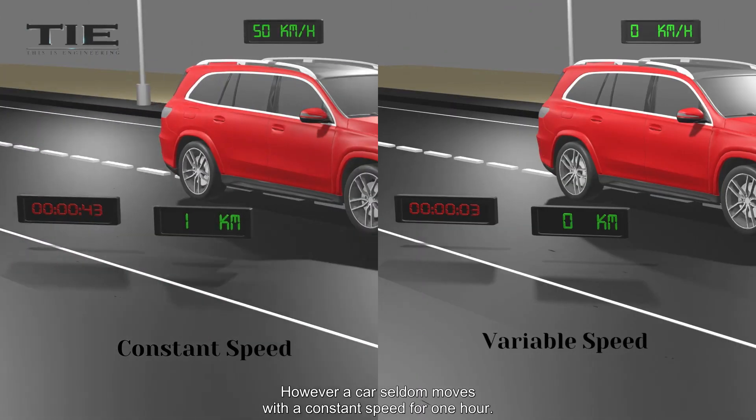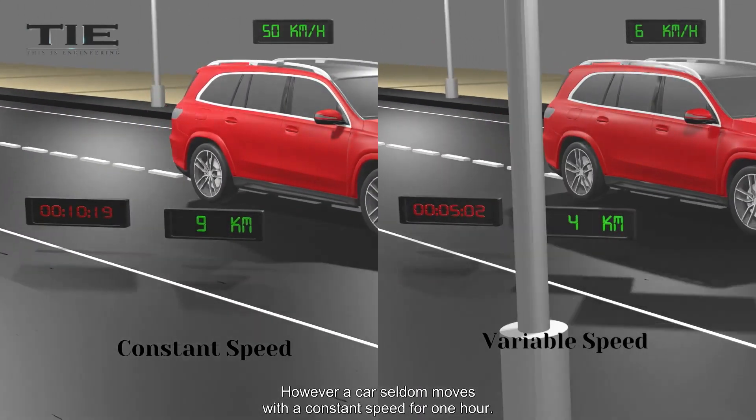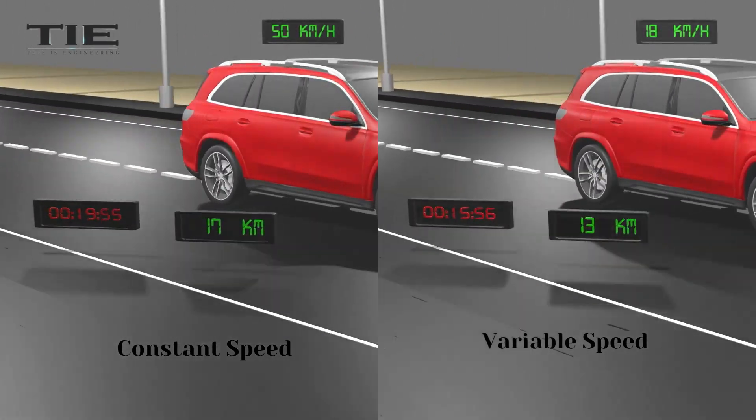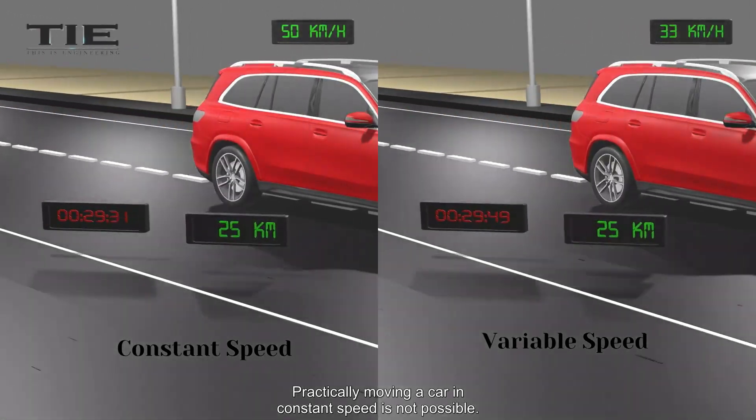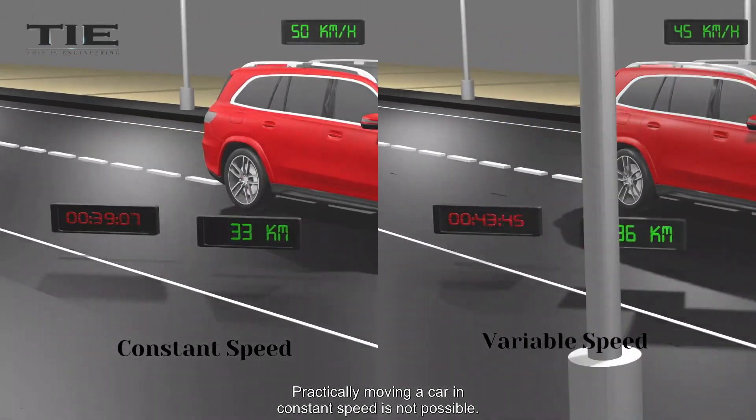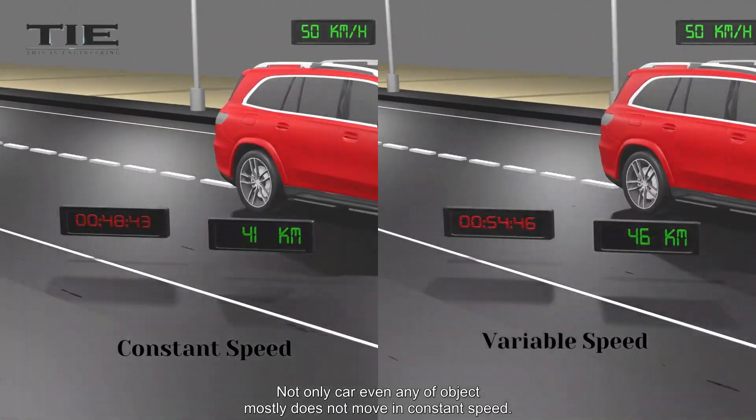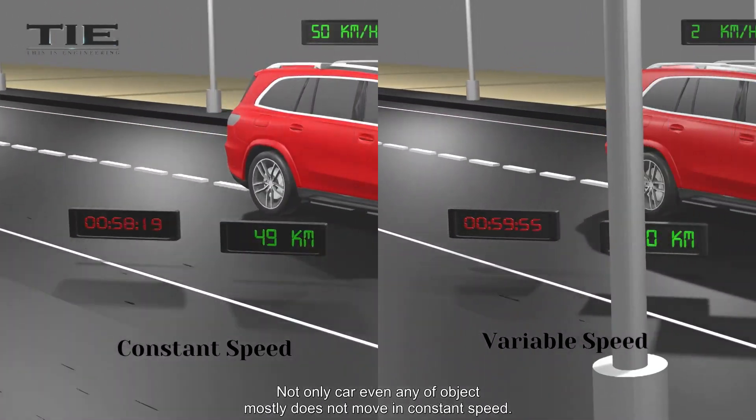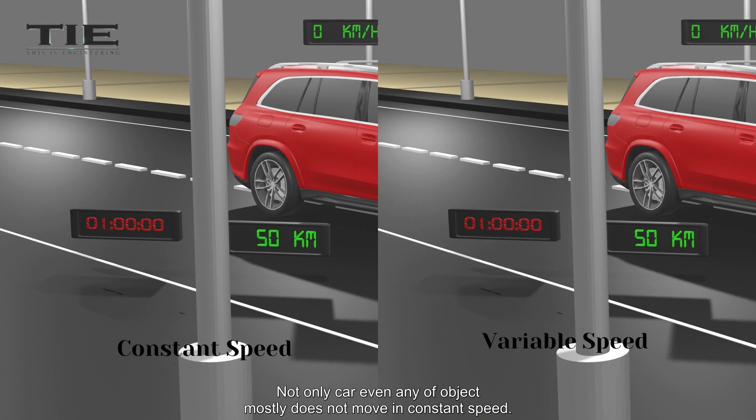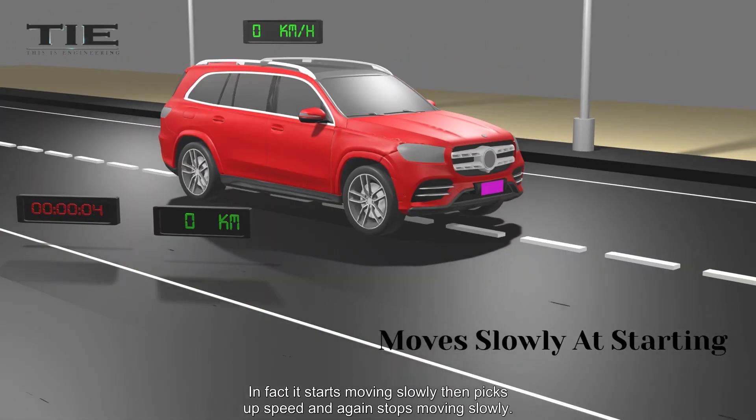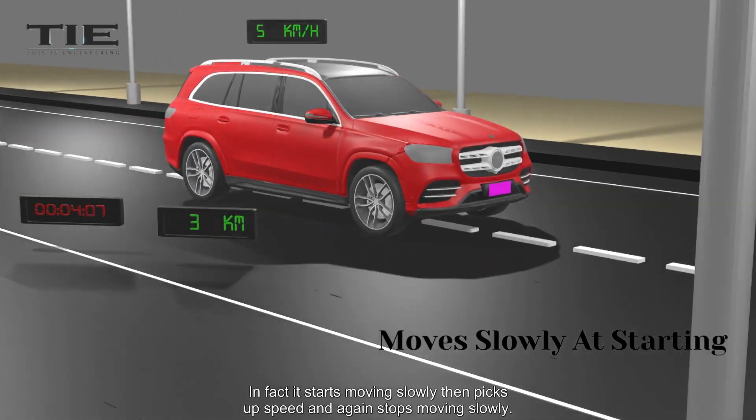However, a car seldom moves with a constant speed for 1 hour. Practically, moving a car in constant speed is not possible. Not only car, even any of object mostly does not move in constant speed. In fact, it starts moving slowly, then picks up speed, and again stops moving slowly.